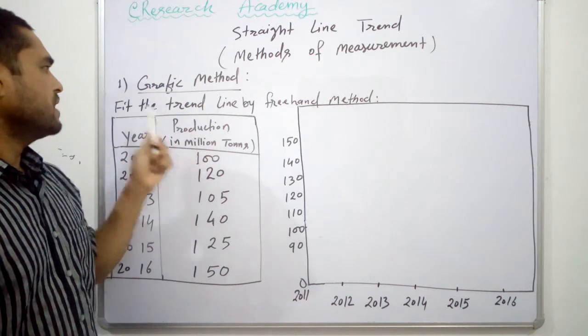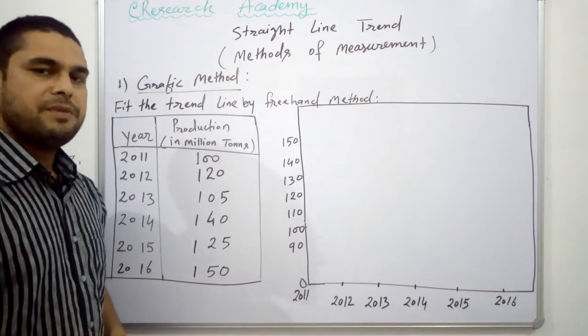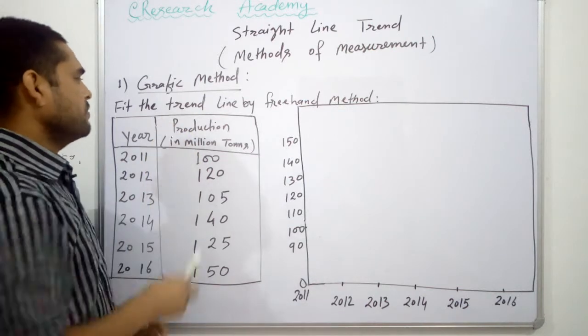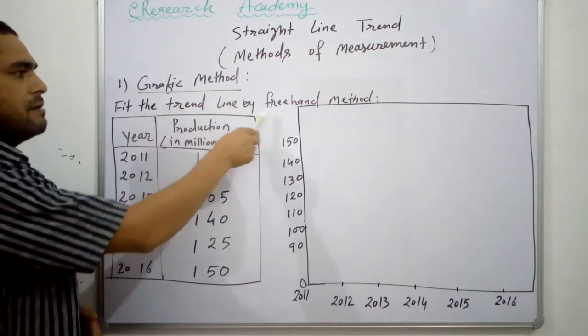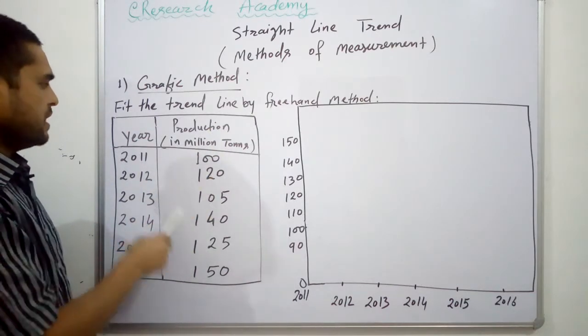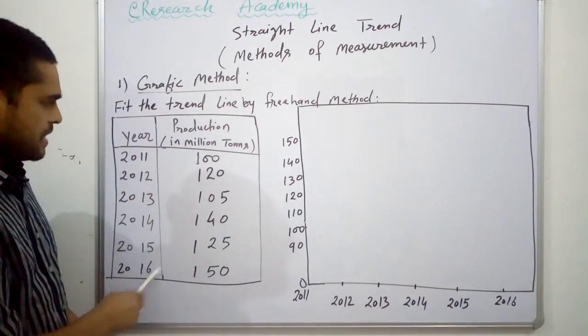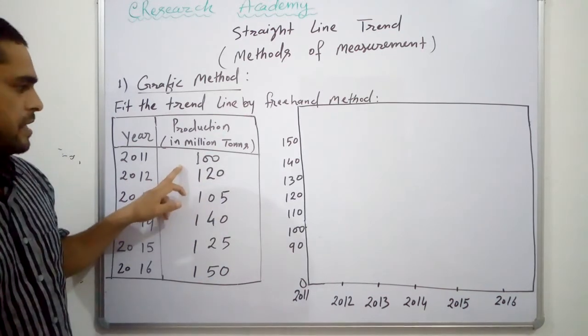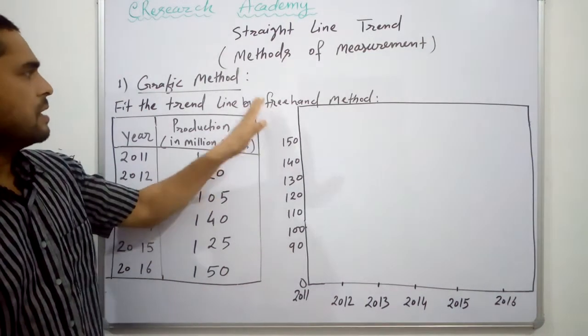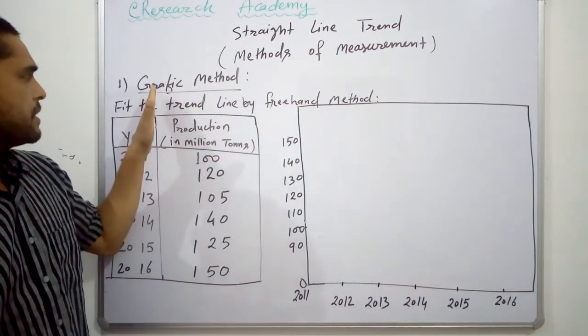Under this one is straight line. First one, the graphic method. Second one is the semi-average method, and third one is the least square. So this is the first one by the graphic method. We are asked to fit the trend line by freehand method here, and we are given the years and the production in billion tons. Years are from 2011 to 2016 and their corresponding production in tons.